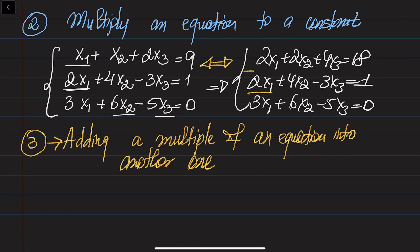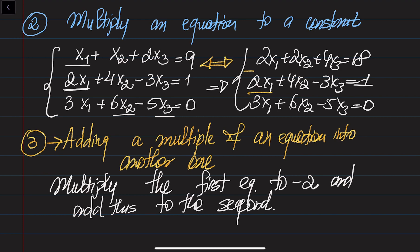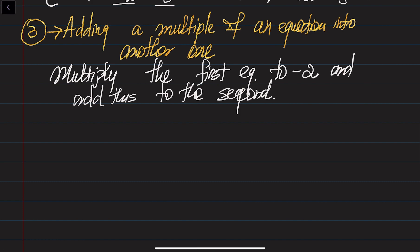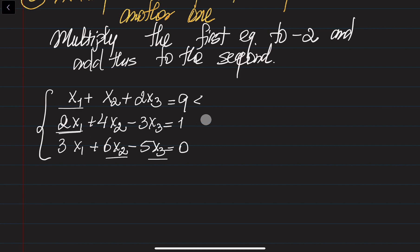If I would like to eliminate 2x1 from the second equation, I would multiply the first equation by minus 2 and add it to the second equation. Let's copy the system again. What I would like to do is multiply the first equation — let me denote it as equation 1 — by minus 2, and add it to the second equation.